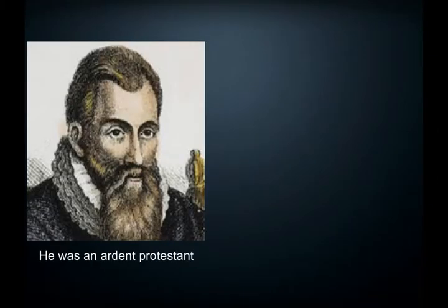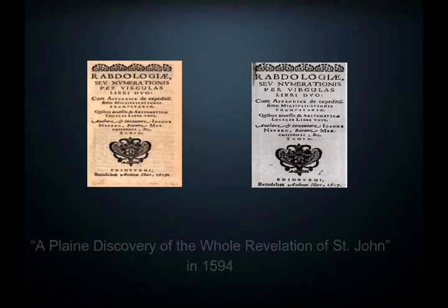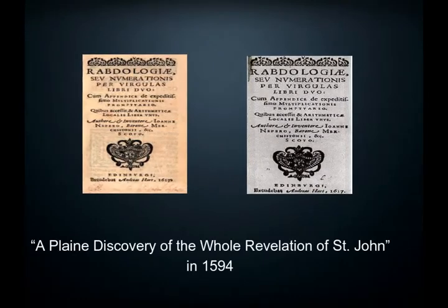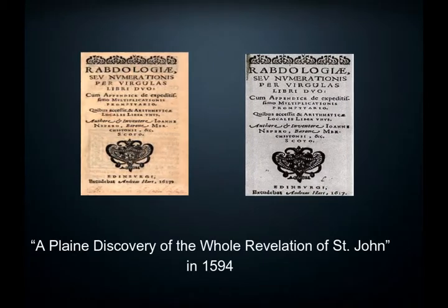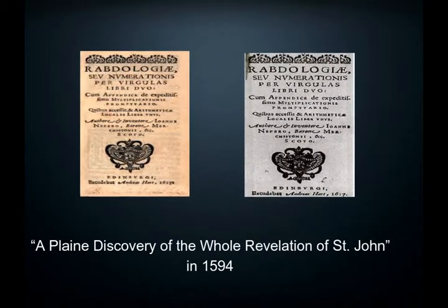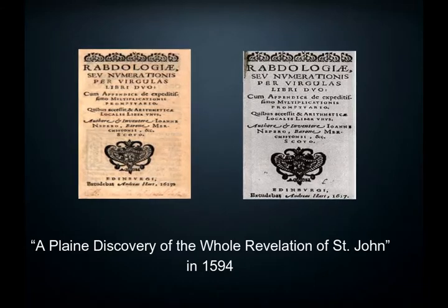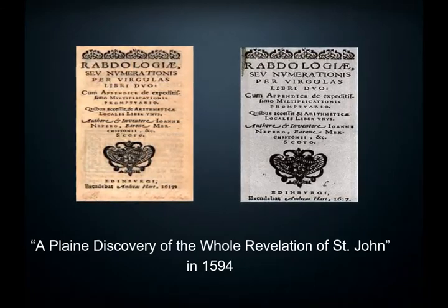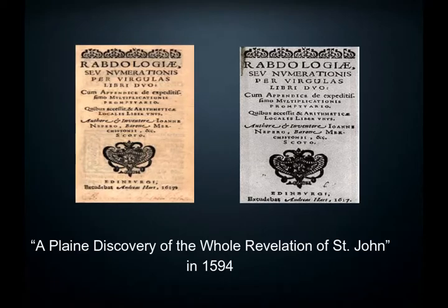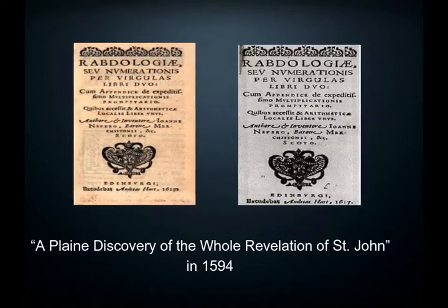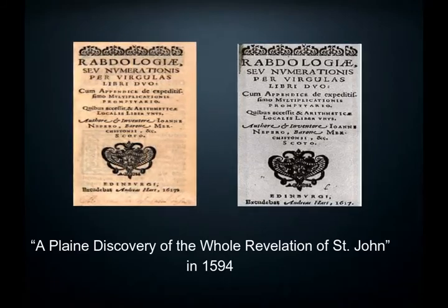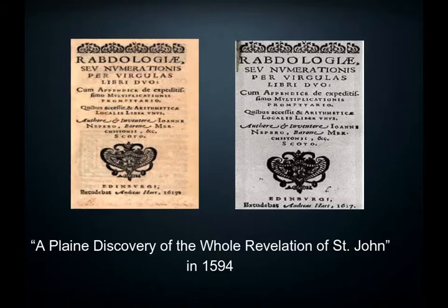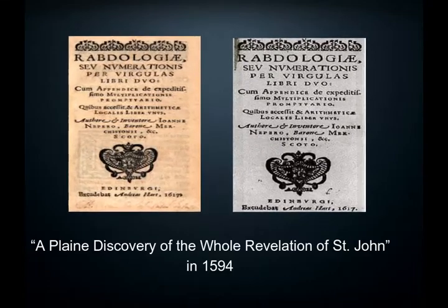John Napier was an ardent Protestant, and he published 'A Plain Discovery of the Whole Revelation of St. John' in 1594, based partly on concerns that Philip of Spain might invade Scotland. This work of John Napier occupies a prominent place in Scottish ecclesiastical history.